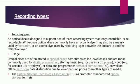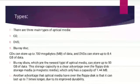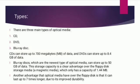There are three main types of optical discs: CD, DVD, and Blu-ray disc. A CD can store up to 700 MB of data, a DVD can store up to 8.4 GB of data, and a Blu-ray disc can store up to 50 GB of data. This is a clear advantage over floppy disk media, which only has a capacity of 1.44 MB.